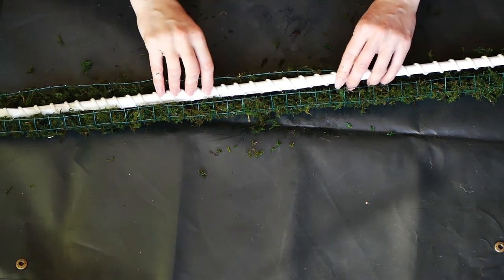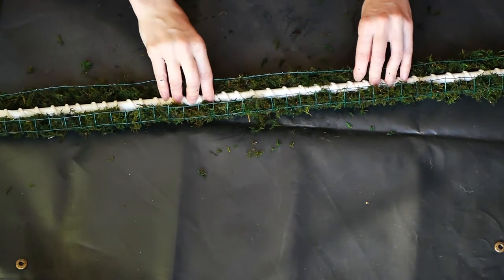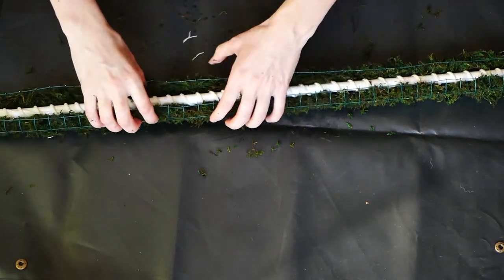Then I placed the PVC pipe with the macrame cord in the middle and added more sphagnum moss.